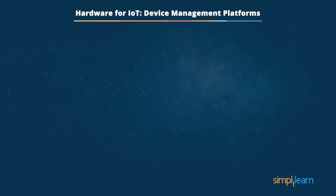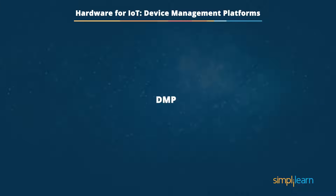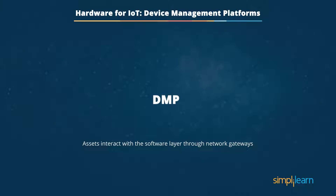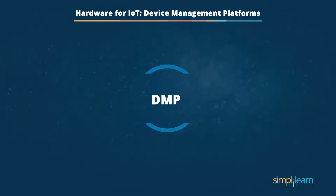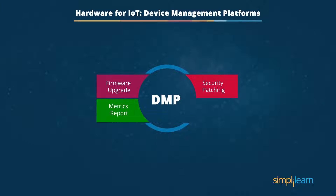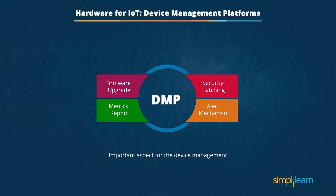The second most crucial aspect of IoT is Device Management Platforms, or DMPs. DMPs are the platforms through which assets interact with the software layer through network gateways. DMPs come with various functionalities including firmware upgrades, security patching, and reporting of metrics. They also help develop alert mechanisms for industrial equipment with open source OS like Arduino. Overall, it is an important aspect of device penetration management.